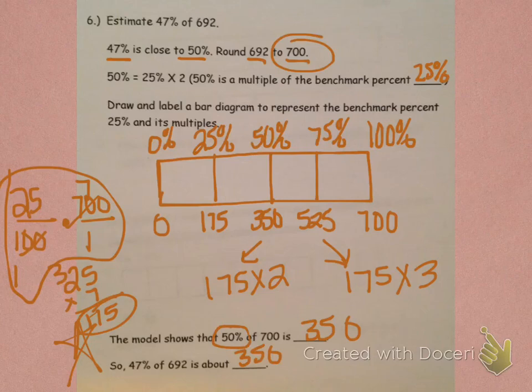So, 50% of 700, if we look on this chart, 50% of 700 is 350, which means that 47% of 692 is about 350. And that concludes the notes for today. Have a great weekend.